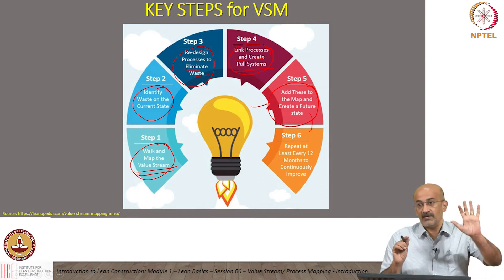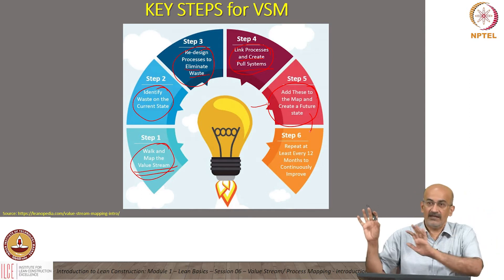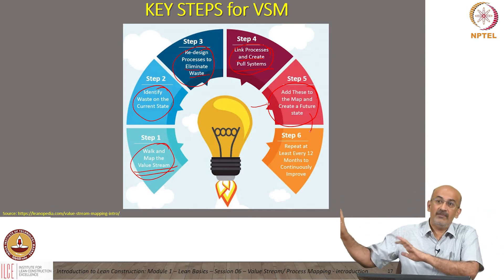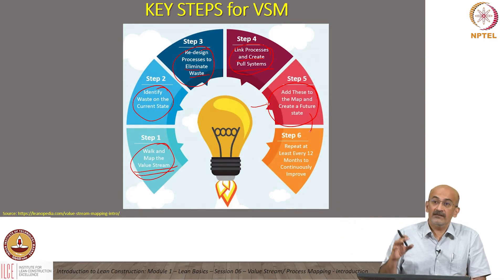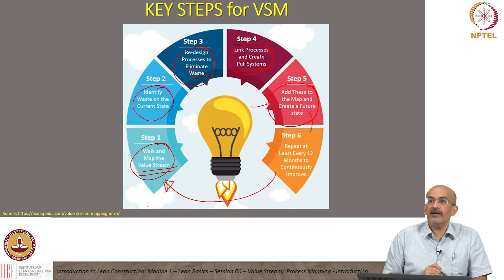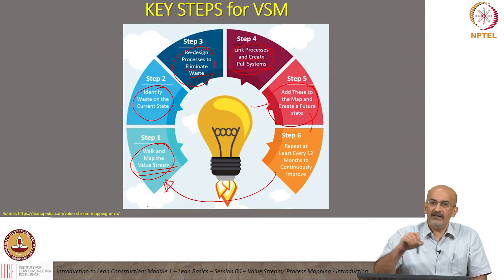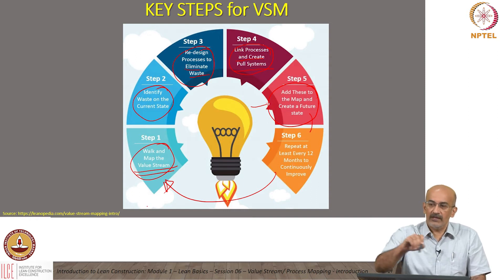You can map the current state and map the future state, but it can remain on the wall as just a future state map. You have to go back and actually implement these at your site. Once you implement it, you go back and improve it again — the cycle continues, almost like the PDCA cycle we are used to. This is from a value stream mapping perspective.